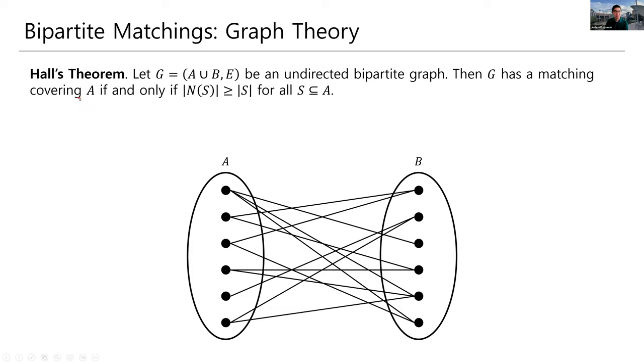What is a matching covering A? Well, in last lecture we defined what it meant for a matching to cover something. It means that when you look at all of the edges, every node in capital A, so in this left hand side, must be the end point of some edge in the matching. So there shouldn't be anybody left out. If G has such a matching that covers everybody in A, then this complicated technical condition is true.